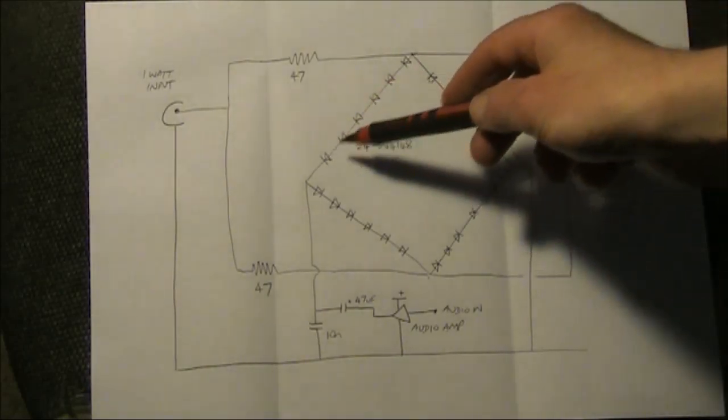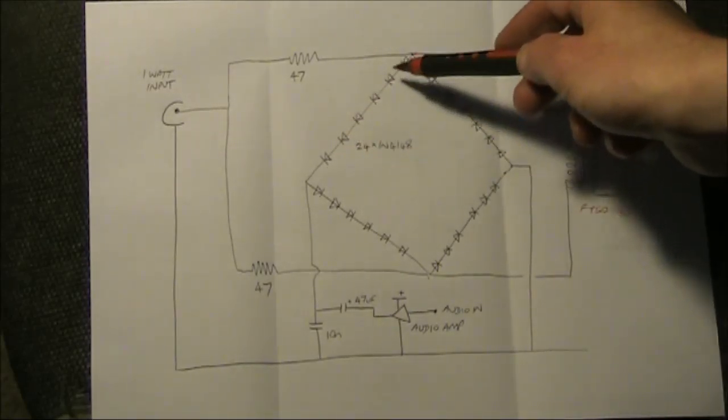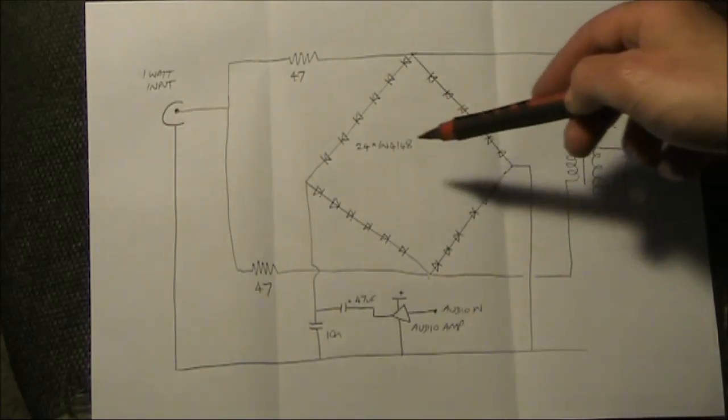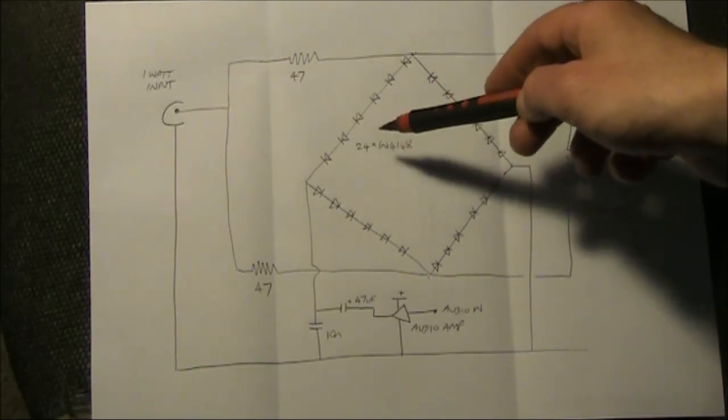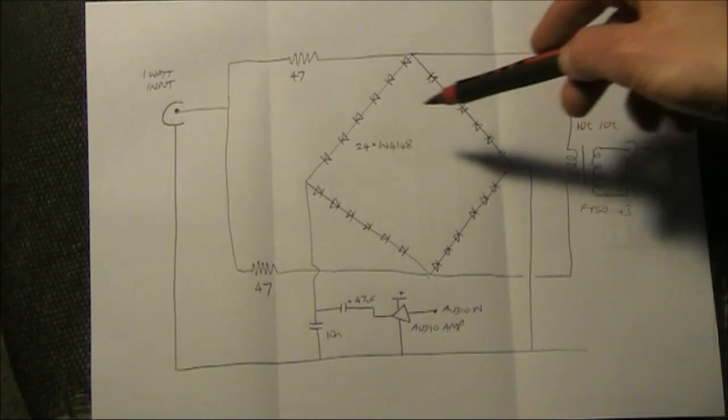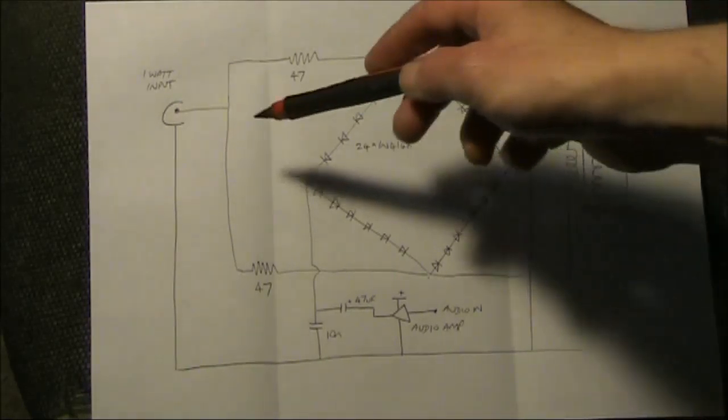The diodes here are all facing in one direction. Each leg has six diodes in series. If you don't have that number of diodes, you could use four or three or two. You probably just won't get as much output power, but your drive requirements will be a bit less.